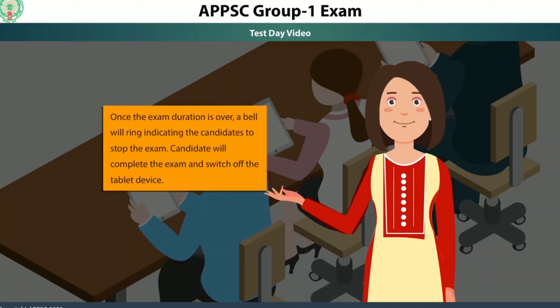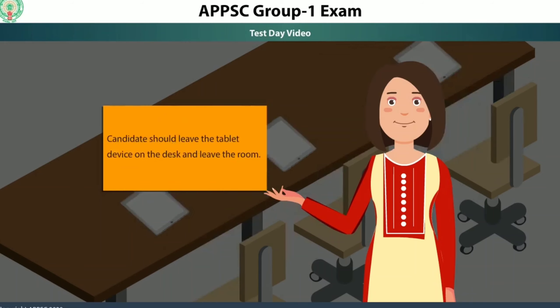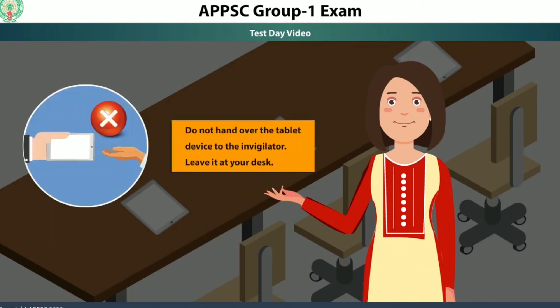Once the exam duration is over, a bell will ring indicating candidates to stop the exam. The candidate will complete the exam and switch off the TABOT device. The candidate should leave the TABOT device on the desk and leave the room. Do not hand over the TABOT device to the invigilator — leave it at your desk.